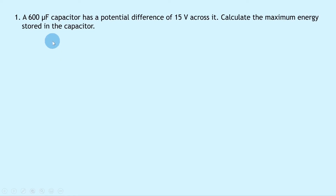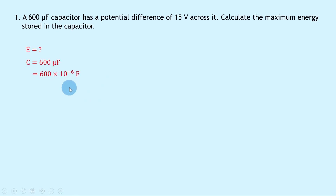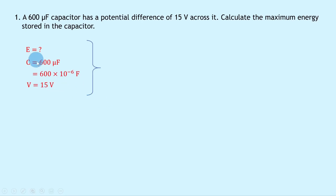So let's get started. Question 1 says that a 600 microfarad capacitor has a potential difference of 15 volts across it. Calculate the maximum energy stored in the capacitor. Writing down what we know: we're trying to find the energy E; the capacitance C is 600 microfarads, which we can rewrite as 600 times 10 to the minus 6 farads; and the potential difference V is 15 volts.